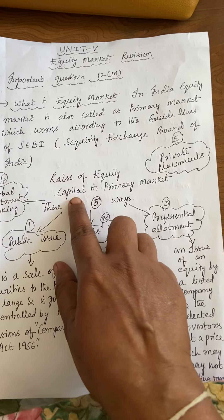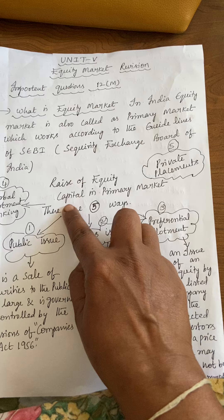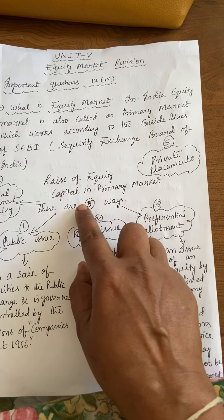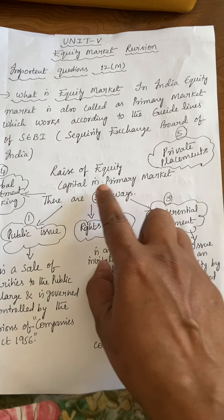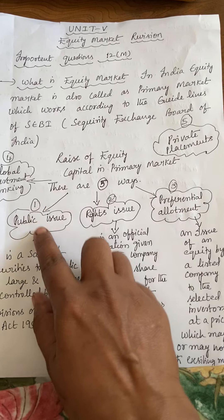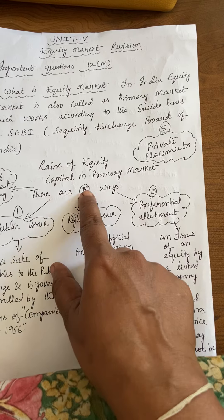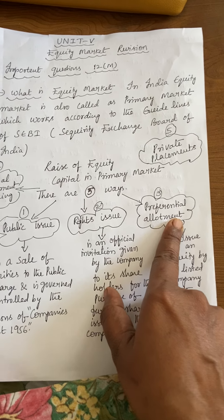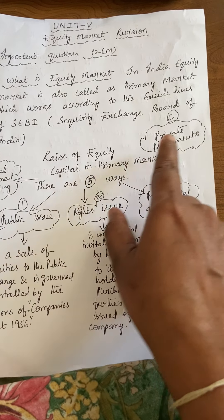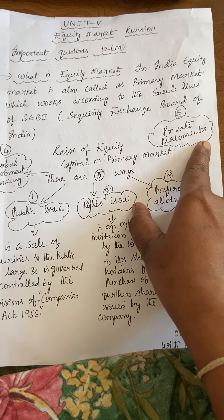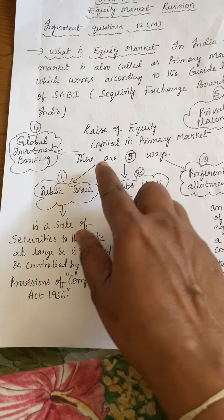To raise capital in the equity market, there are five ways. The first one is public issue, the second one is rights issue, the third one is preferential allotment, the fourth one is global investment banking, and the fifth one is private placements. In this way, we can raise capital in the equity market in India.